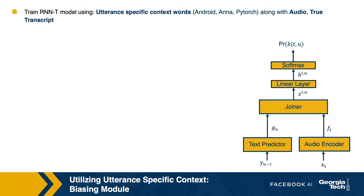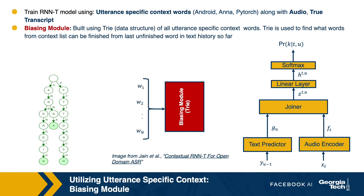Here is a system that we built at Facebook that allows us to do implicit boosting. In the original formulation of RNNT, we have an audio encoder and a text predictor. We introduce a new component called the biasing module, along with the audio encoder and text predictor. The biasing module has a trie built using contextual words relevant to each audio. For example, relevant contextual words for an audio might be Android, Anna, and PyTorch.